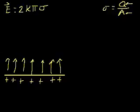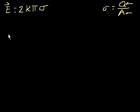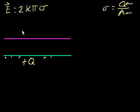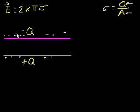Let's say I have two plates. They're the same size, and they both have area A. Let's say that I place plus Q worth of charges on the top plate — so this is positively charged — and let's say the bottom plate is minus Q, so this is negatively charged. What's the electric field going to look like between these two?